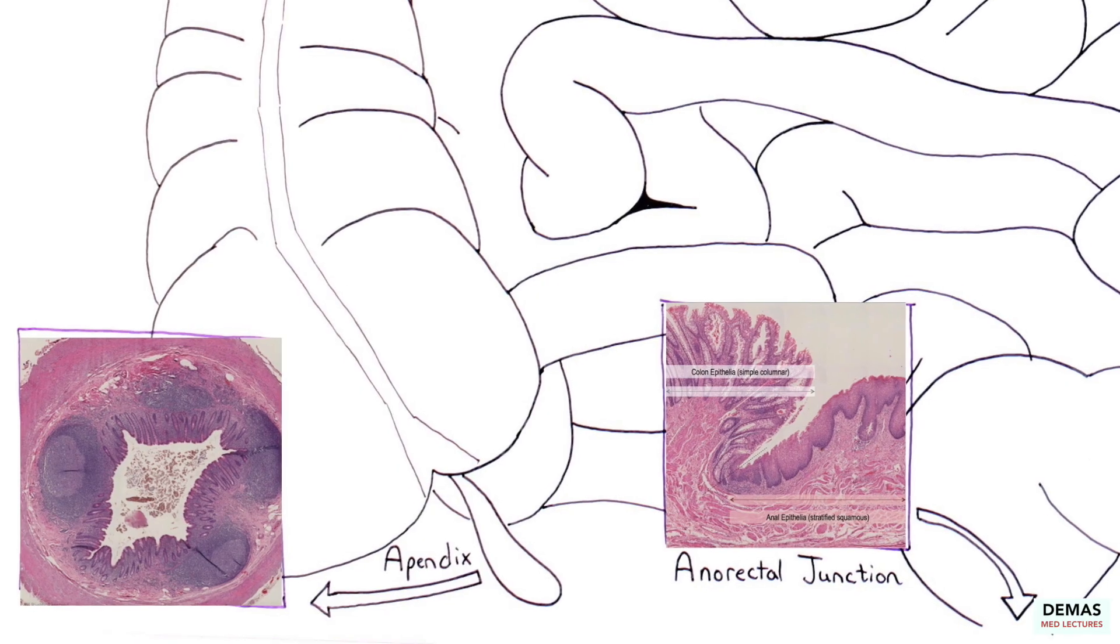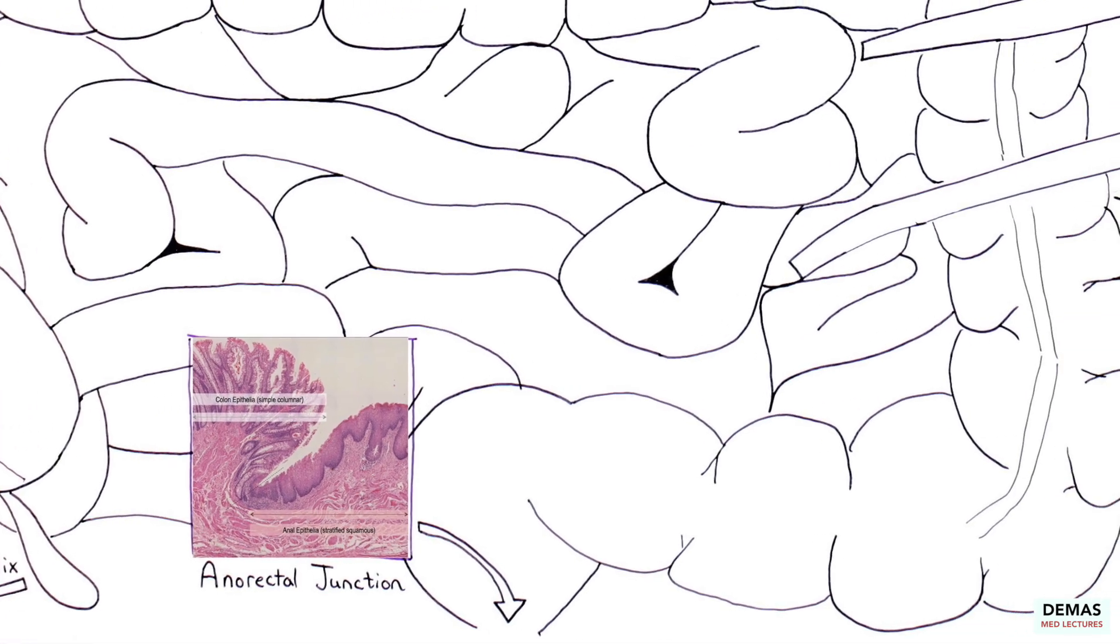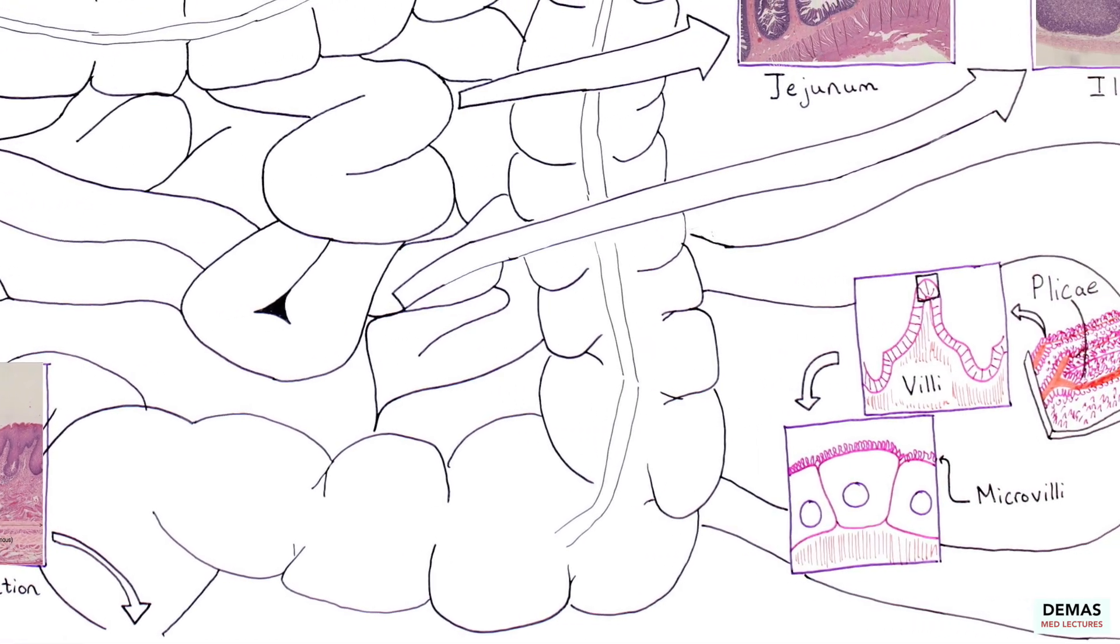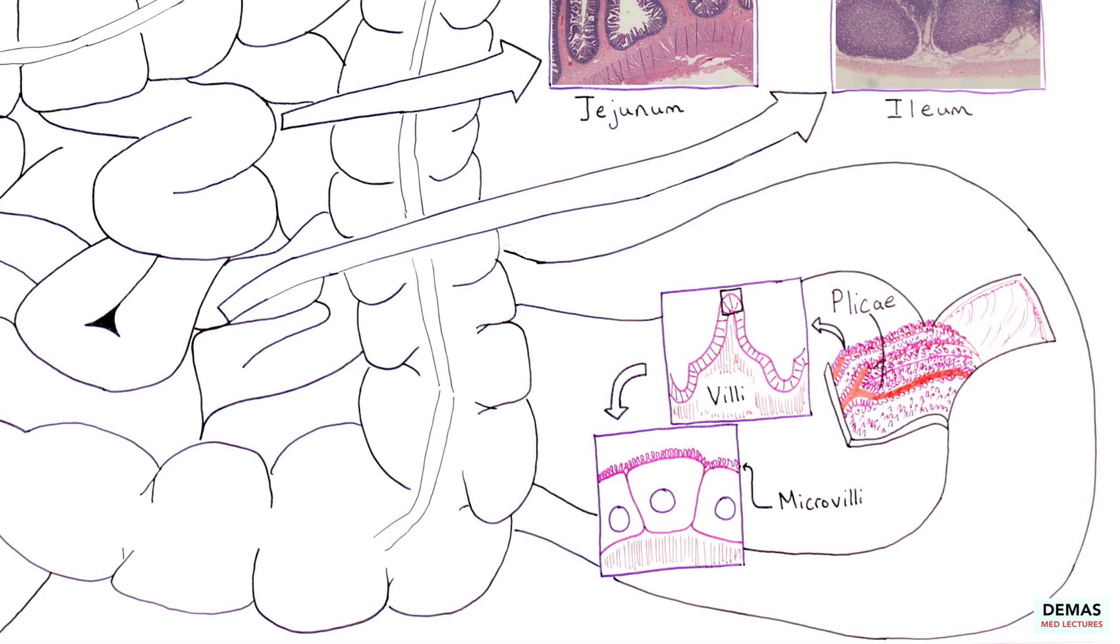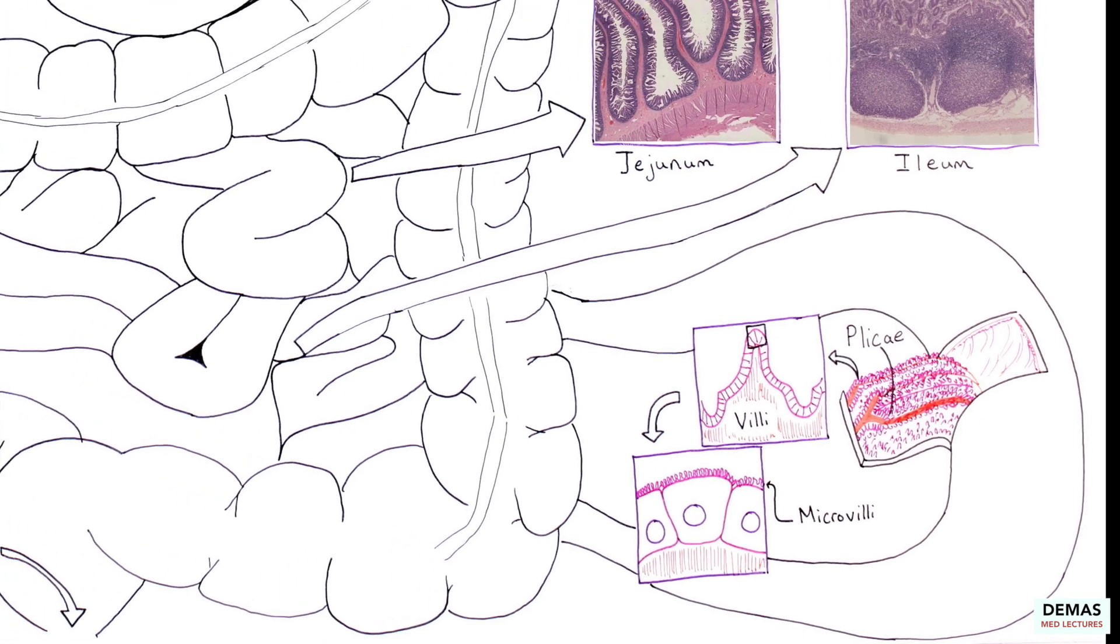We also discussed how structure enables function of the GI tract, such as the folded structure of the mucosal wall that forms plicae, folded villi along the wall, and the microvilli found on individual enterocyte cells that together drastically increase the surface area of the intestines.